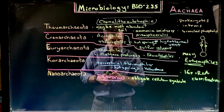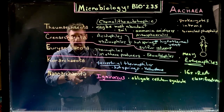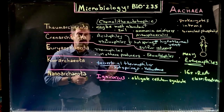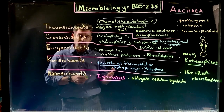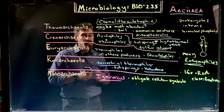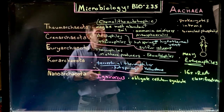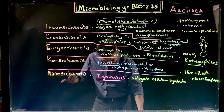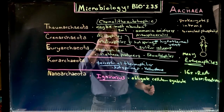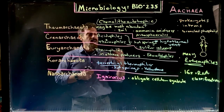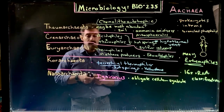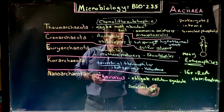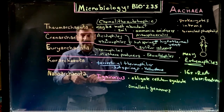There are certain bacteria that Nanoarchaeota live inside as obligate cellular symbiotes. This group, called the Nanoarchaeota, is very small and has one of the smallest genomes known — partly because they are lacking a large number of genes. They are also typically strict anaerobes.